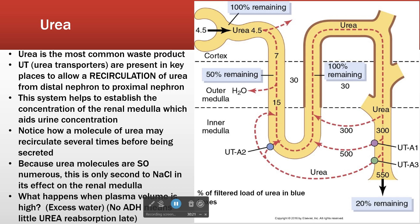The easiest way to look at this is to follow urea through the nephron. Urea is a tiny molecule, freely filtered at the glomerulus. Here in the first part of the proximal convoluted tubule, a hundred percent of what was filtered is still in the urine because it hasn't gone anywhere.